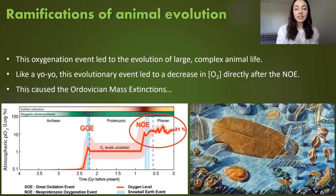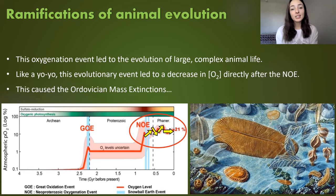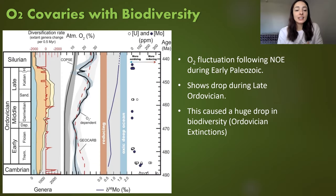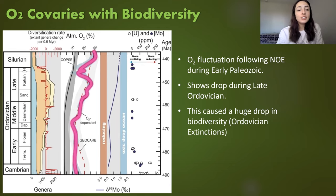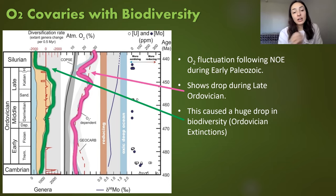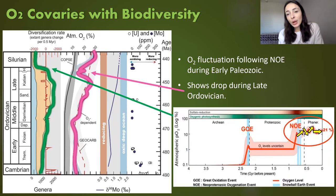One thing that oxygen-breathing life caused was the Ordovician mass extinctions, due to a huge dip in oxygen after the NOE that was likely triggered by oxygen-breathing life. Looking at this graph showing atmospheric oxygen concentration alongside Ordovician biodiversity, we see a huge drop in oxygen correlating with a major drop in biodiversity during the late Ordovician mass extinctions, shown by the second yellow arrow on the graph.